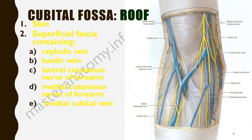We also have the lateral cutaneous nerve of the forearm and the medial cutaneous nerve of the forearm in the roof. Remember the lateral cutaneous nerve of the forearm is an extension — it's a continuation of the musculocutaneous nerve, which supplies the brachialis, the biceps brachii, and the coracobrachialis. So these are the structures found within the superficial fascia of the roof of the cubital fossa: the skin and the superficial fascia.